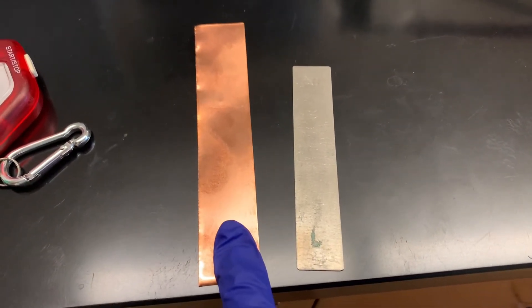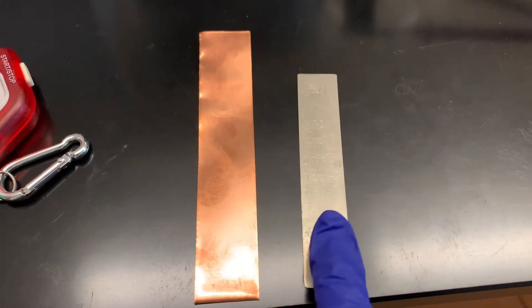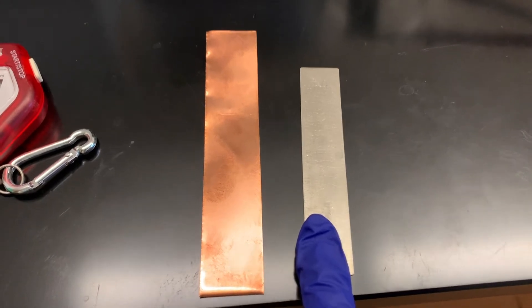We write down our observations that we have a shiny copper-colored piece of copper, and then this silver piece of nickel.